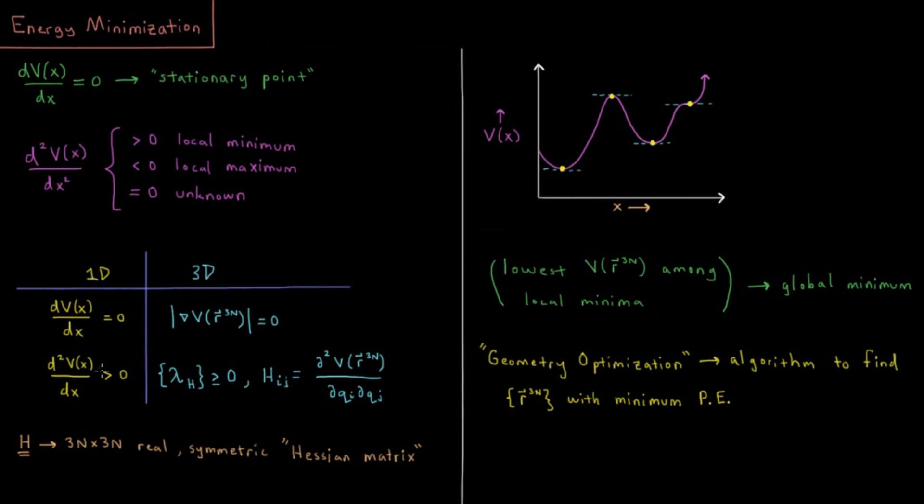The second derivative being greater than zero being the criterion for a local minimum in one dimension, that's quite a bit more complicated in multiple dimensions. You have what's called the Hessian matrix where the elements of that matrix HIJ are the second mixed partial derivatives with respect to all of your molecular coordinates.